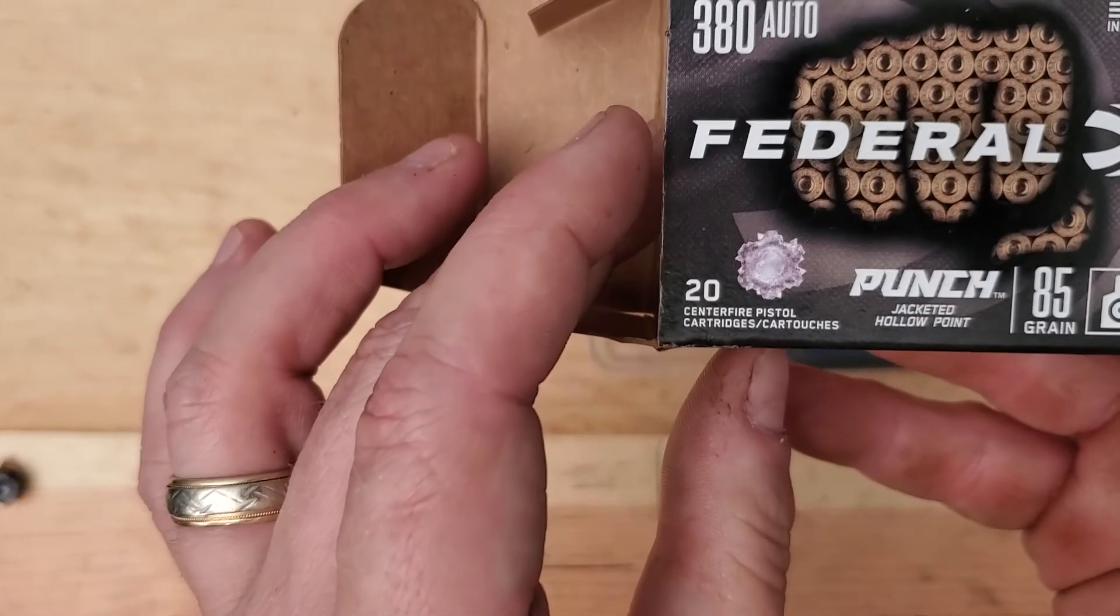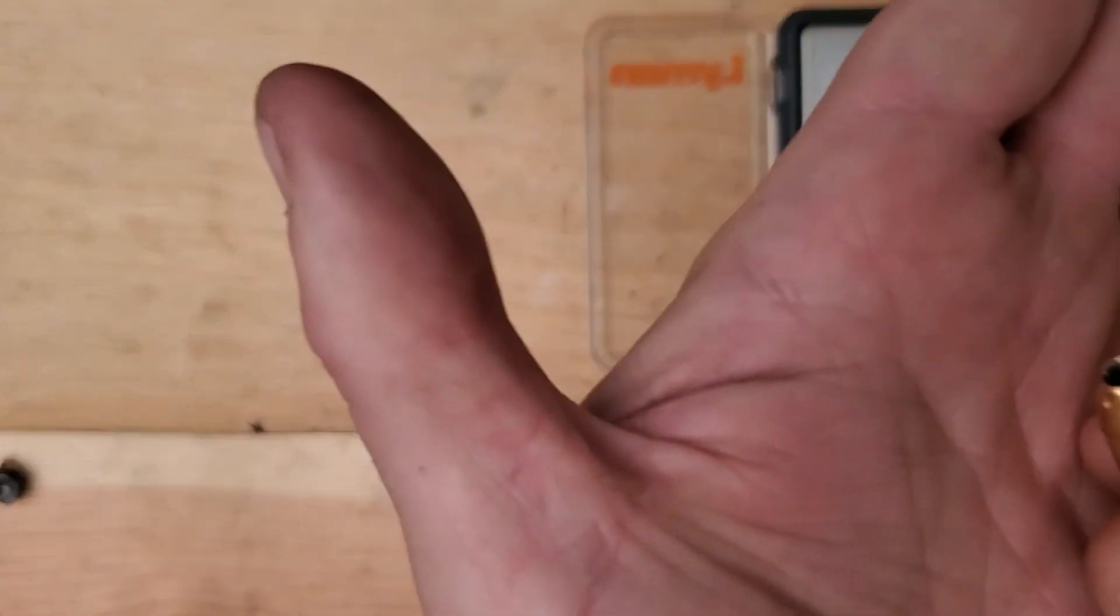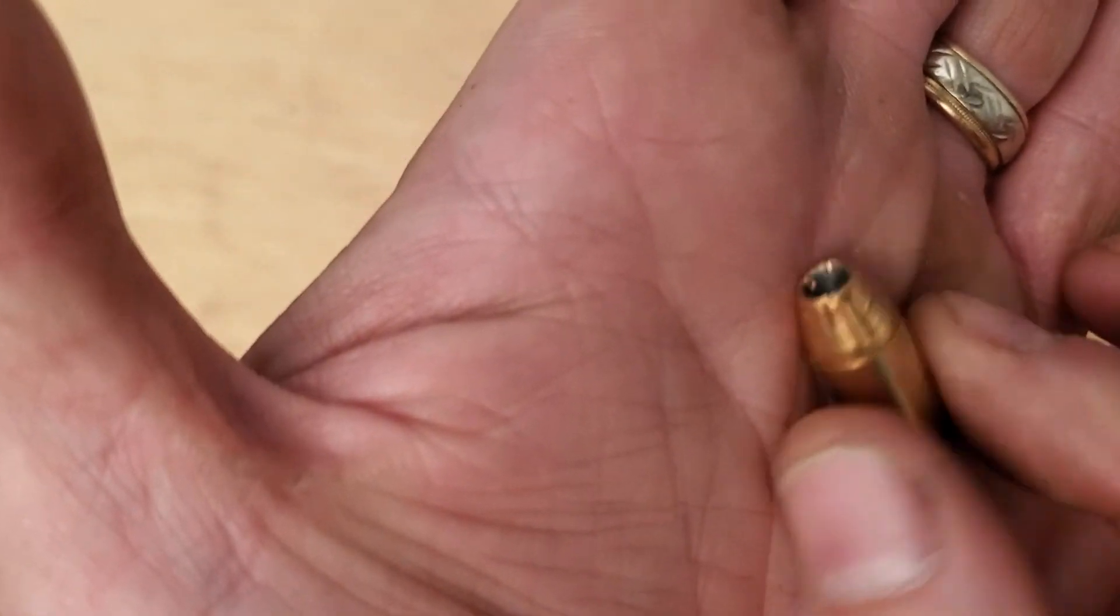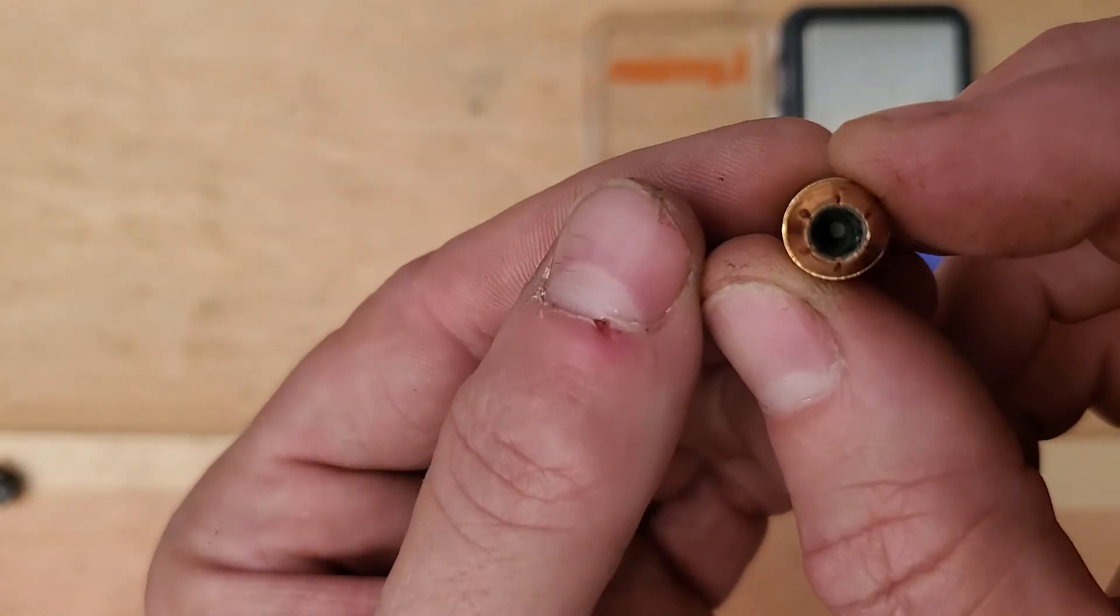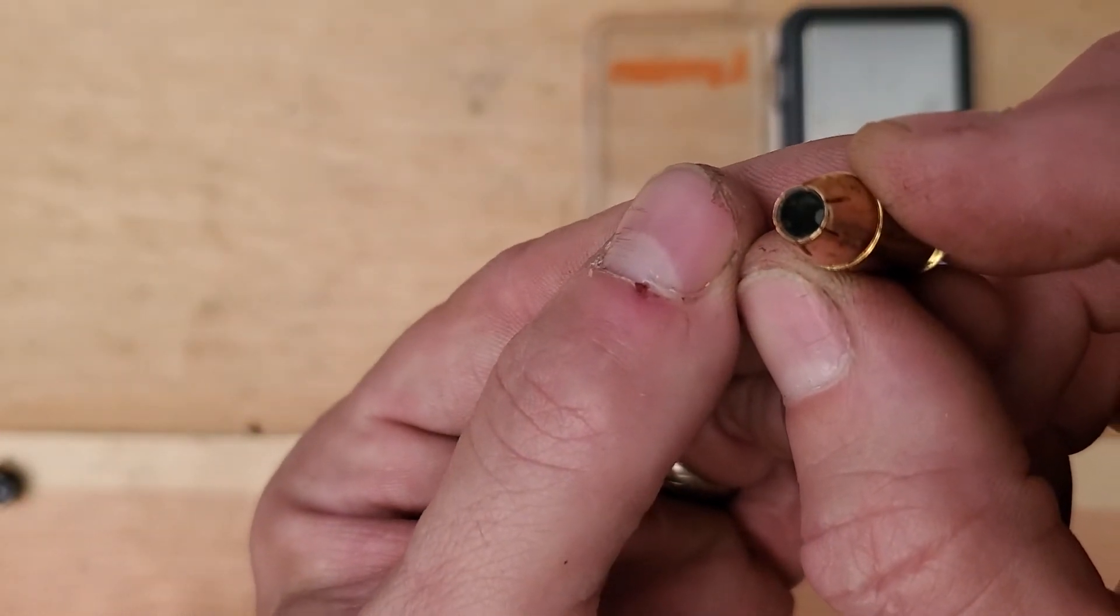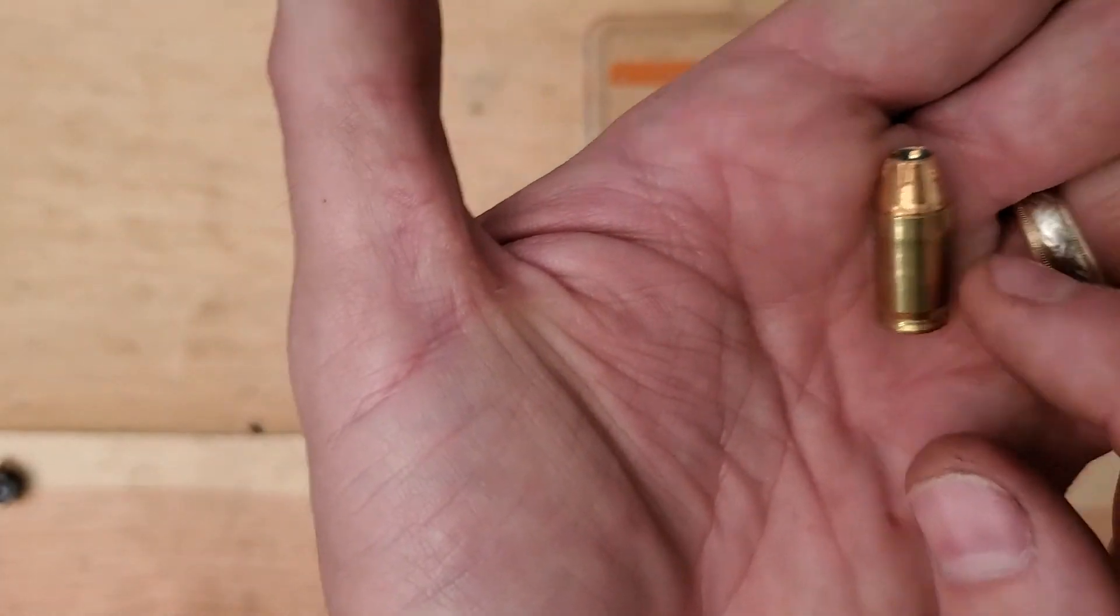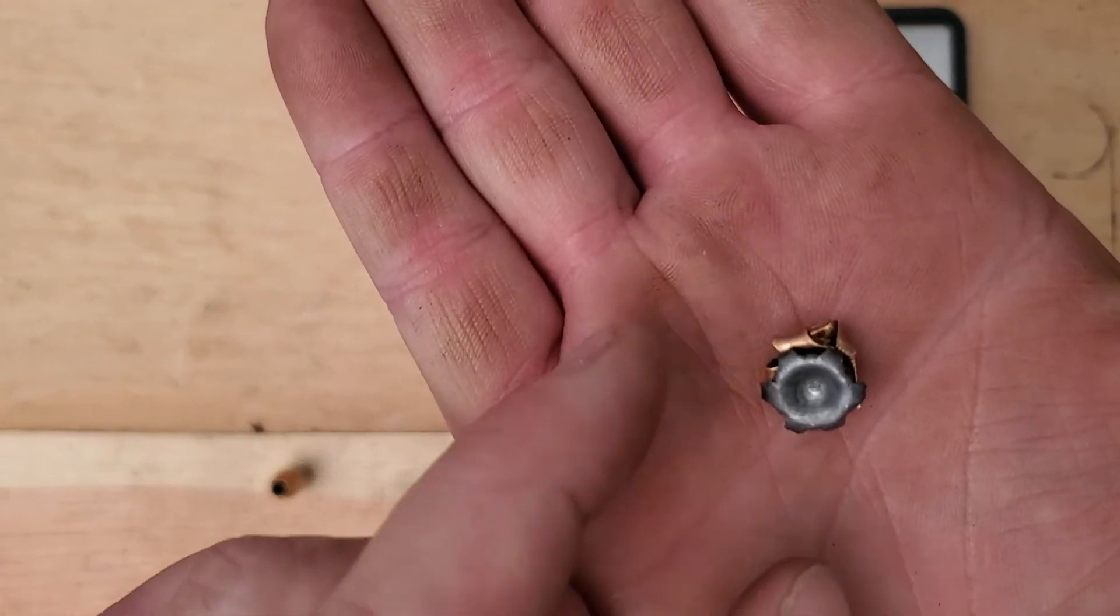And then last but not least was the Federal Punch, which was an 85 grain Federal Punch looks like this. It looks a lot like the Punch in nine and the Punch in 45, a skived hollow point with a, for a 380, a pretty deep, thin lead cavity at the top that gets to solid lead at the bottom. Brass cased, neat looking projectile.